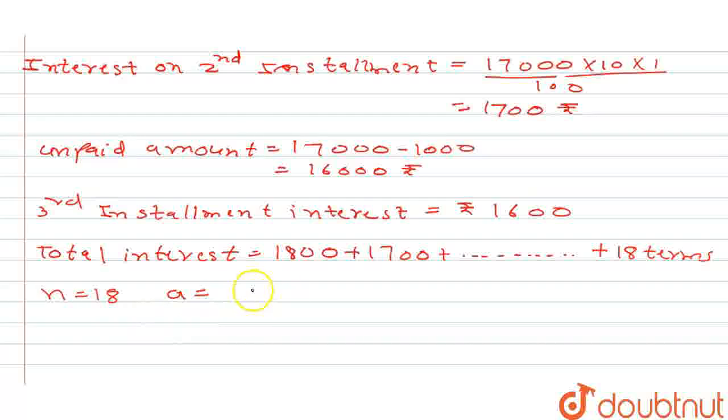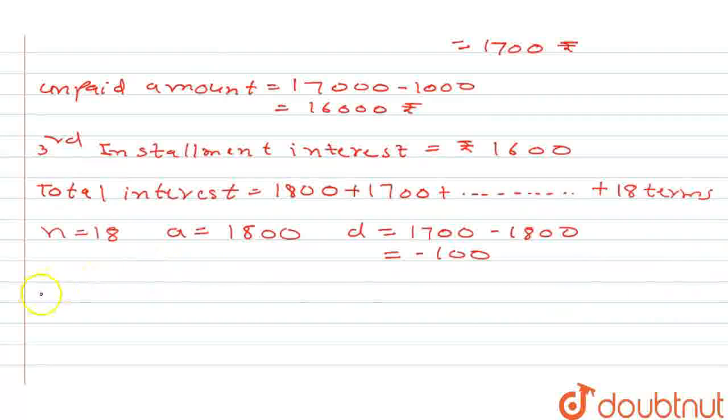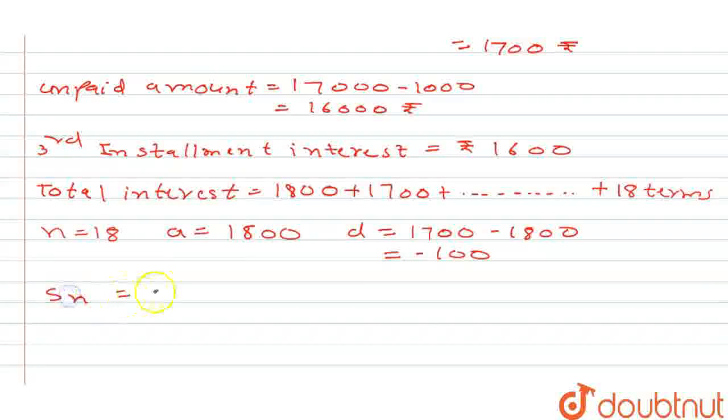Now the first term is 1,800, N is 18. And the common difference D is 1,700 minus 1,800, that is second term minus first term, that is minus 100. So we have to find the sum of 18 terms. S_n equals, the formula is n by 2 into 2a plus n minus 1 into d.